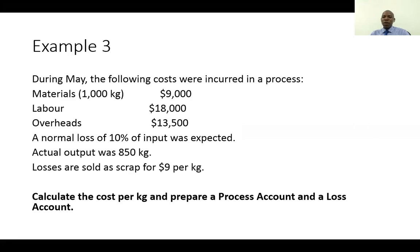Example 3. During May, the following costs were incurred in a process: materials $9,000, labor $10,000, overheads $10,500. A normal loss of 10% of input was expected. Actual output was 850 kg. The losses were sold as scrap for $9 per kg. Calculate the cost per kg and prepare the process account and the loss account.